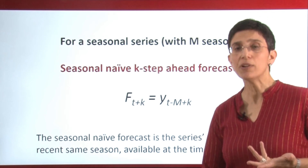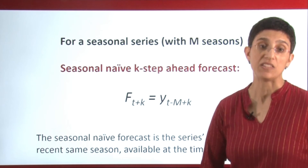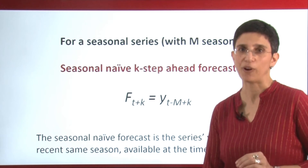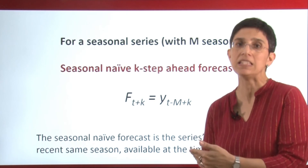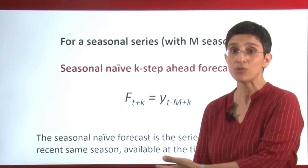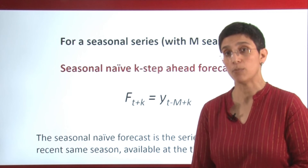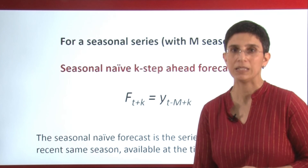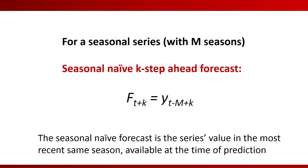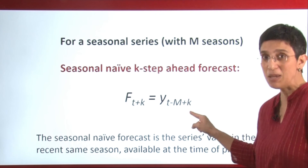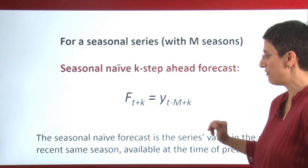What about a series that has seasonality in it, such as monthly seasonality? In that case, the simplest seasonal naive forecast is using the most recent same season. For example, if I'm trying to forecast next January, then I will use the most recent January data point that I have in my data that will be available at the time of prediction. If we have a seasonal series with m seasons, then our k-step ahead forecast will be the value from the most recent same season that we have data for.